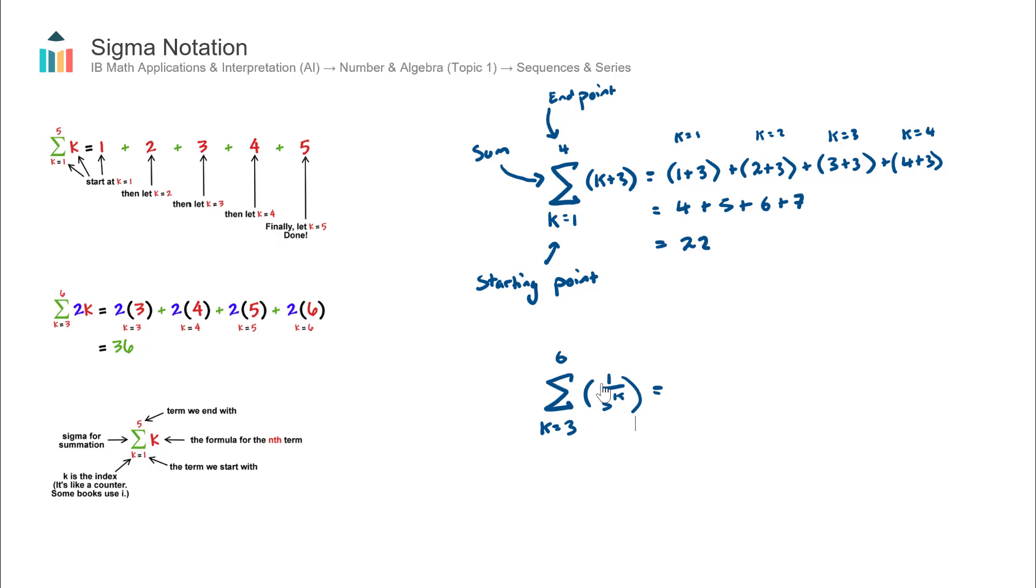The first term will be 1 over 3 to the power of... it's not going to be to the power of 1 this time, because I'm actually starting at 3. So it's going to be 1 over 3 to the power of 3.